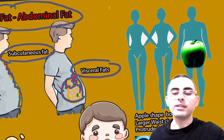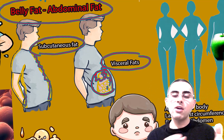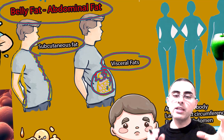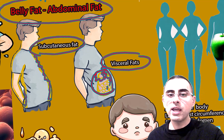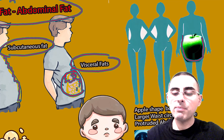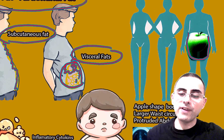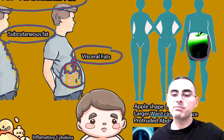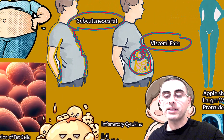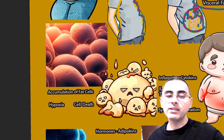How can we tell, just by looking at a person, whether they have subcutaneous or visceral fat? It is impossible to distinguish with certainty, but a general principle is that if a person has an apple-shaped body, there is a high probability they have more visceral fat. Waist circumference is also important — a larger waist circumference suggests more visceral fat. A protruded abdomen is more common among men, though it is not guaranteed.